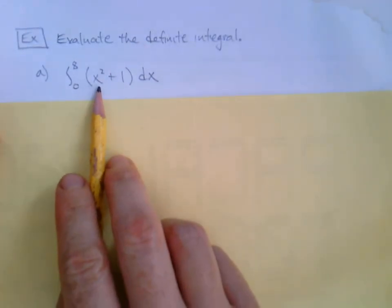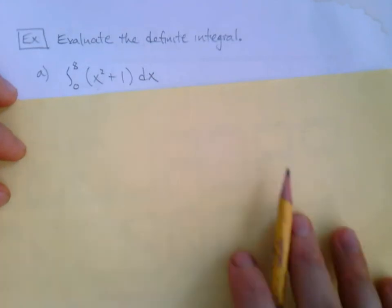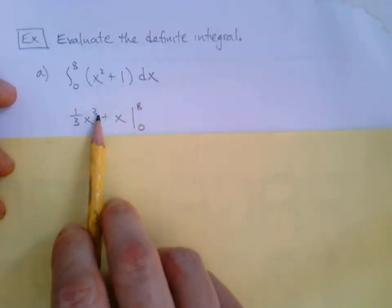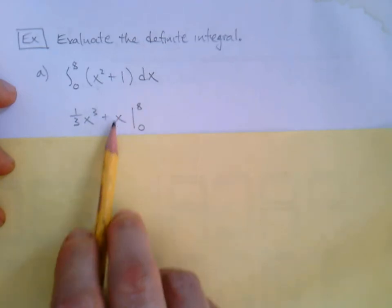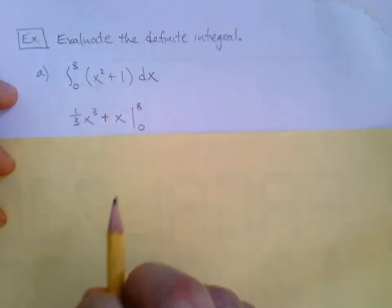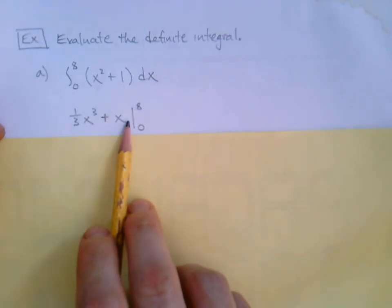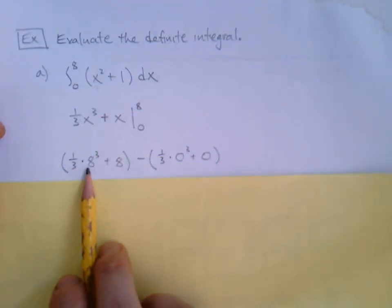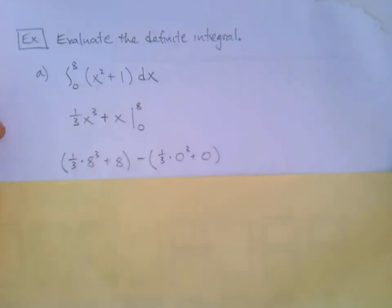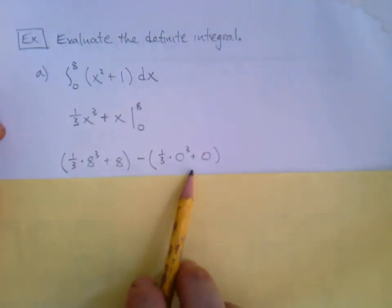So we would read this: the definite integral from zero to eight of x squared plus one dx. Here's what we're going to do: we're going to take the anti-derivative here. What's the anti-derivative of x squared? It had to come from x to the third, and we would need the one-third here so that when we took the derivative it got back to this. The anti-derivative of one would have just been x. Then we'll draw that line from zero to eight. From there, I'm going to plug in the eight to both of them, subtract, and then I'm going to plug in the zero: plug in the eight, subtract, plug in the zero.